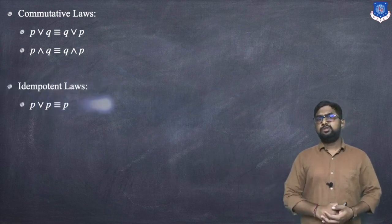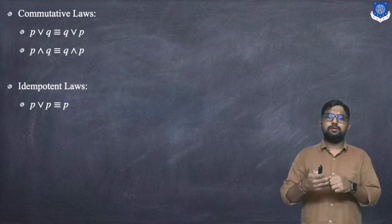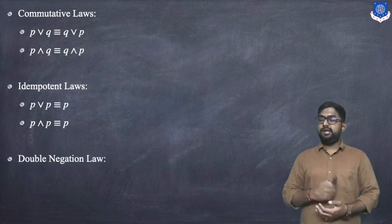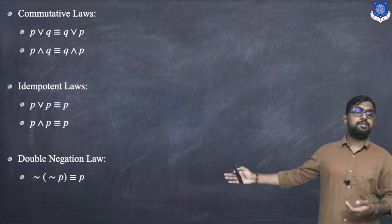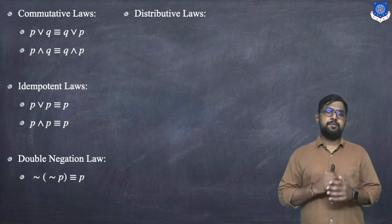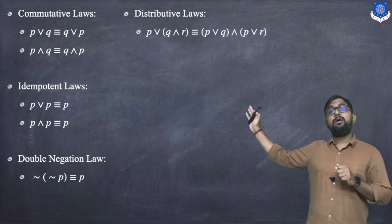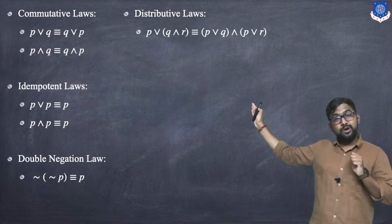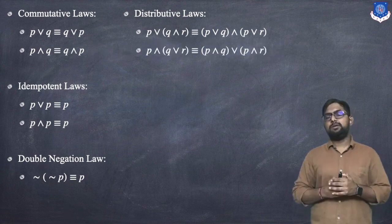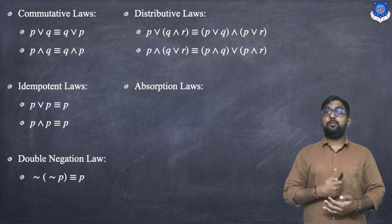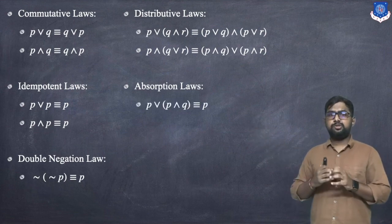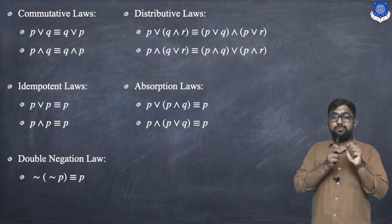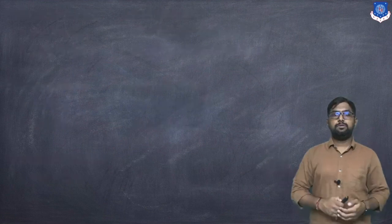The idempotent law: p∨p ≡ p and p∧p ≡ p. The double negation law: ¬¬p ≡ p. The distributive law: p∨(q∧r) ≡ (p∨q)∧(p∨r), and interchanging AND and OR gives the second form. The absorption law: p∨(p∧q) ≡ p, meaning p absorbs p∧q, and p∧(p∨q) ≡ p, meaning p absorbs p∨q.